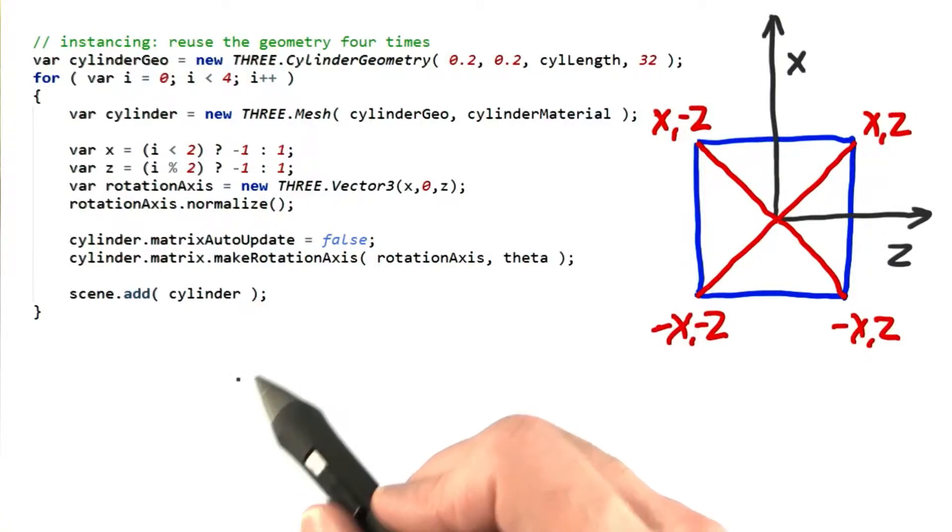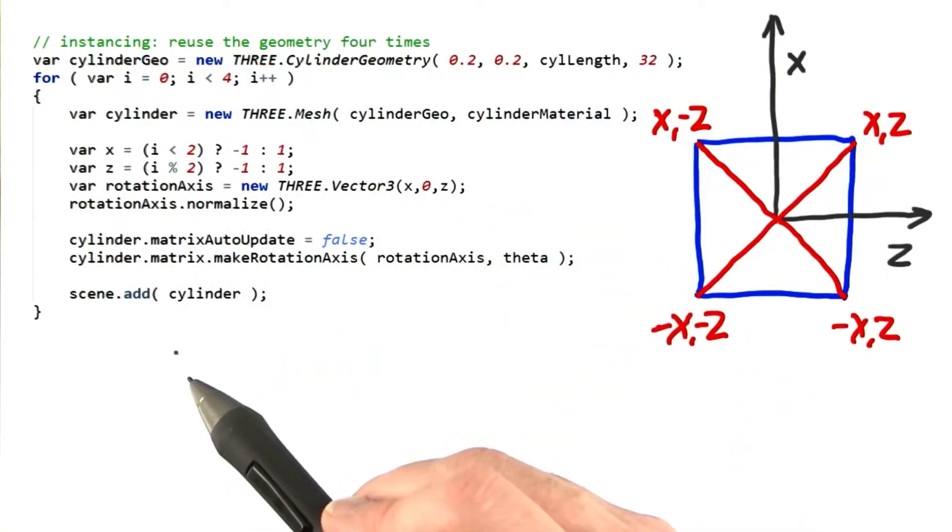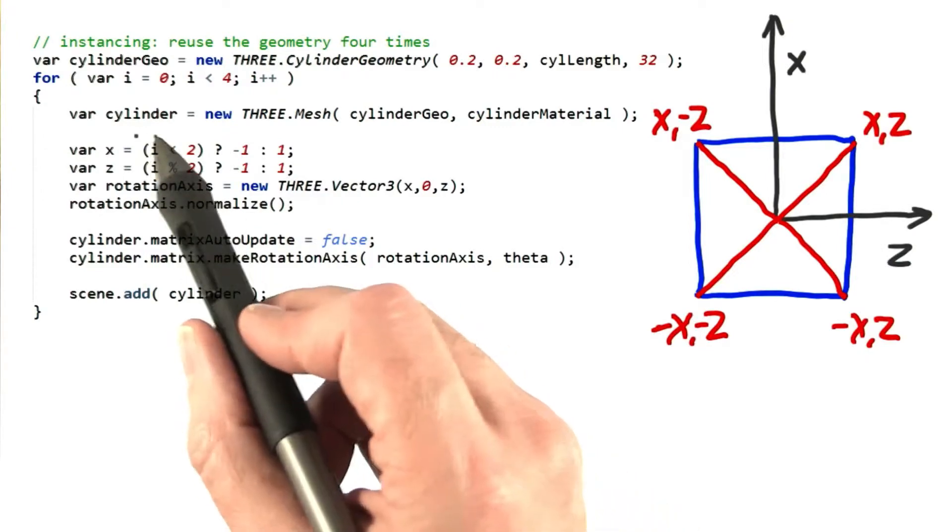There are a few ways to solve this one. Here's the approach I took. I knew that the cylinders were all the same length, so I created just one.